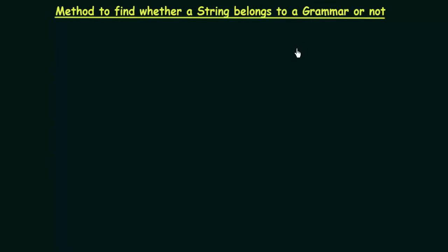Till now we have seen few types of grammars and we have also seen how strings are generated from a given grammar. Now the question is: if you are given a grammar and a string, how do you find out whether that given string belongs to that grammar or not? In this lecture we will be studying the method to find out whether a string belongs to a grammar or not. Let us see the steps we need to follow in order to do this.